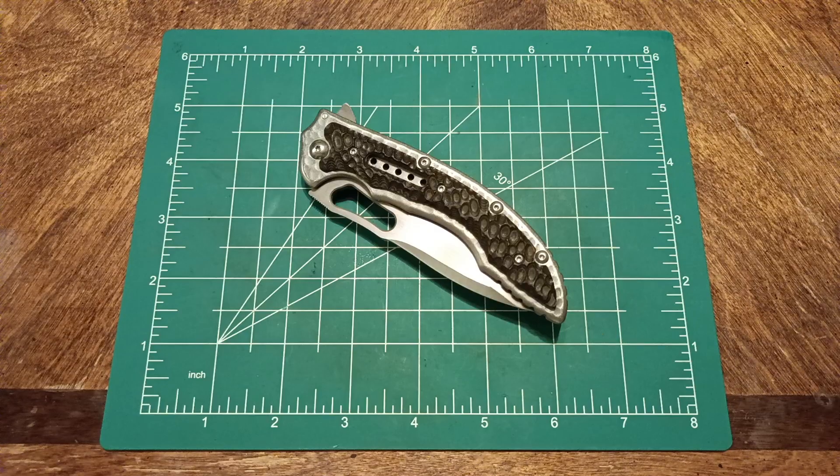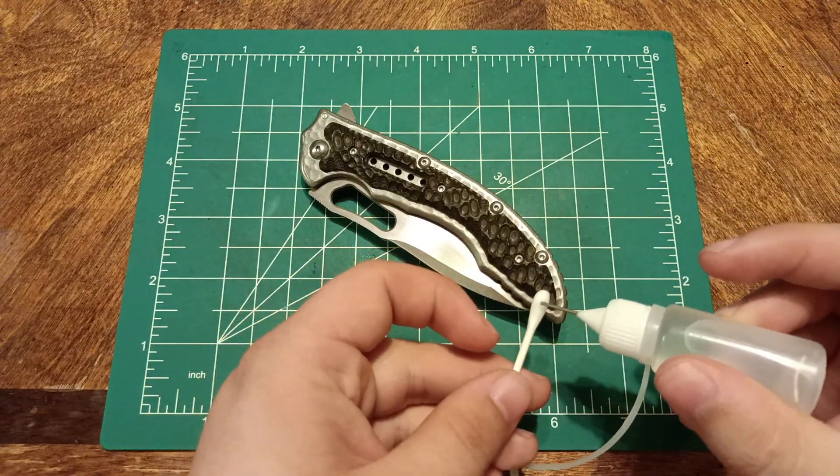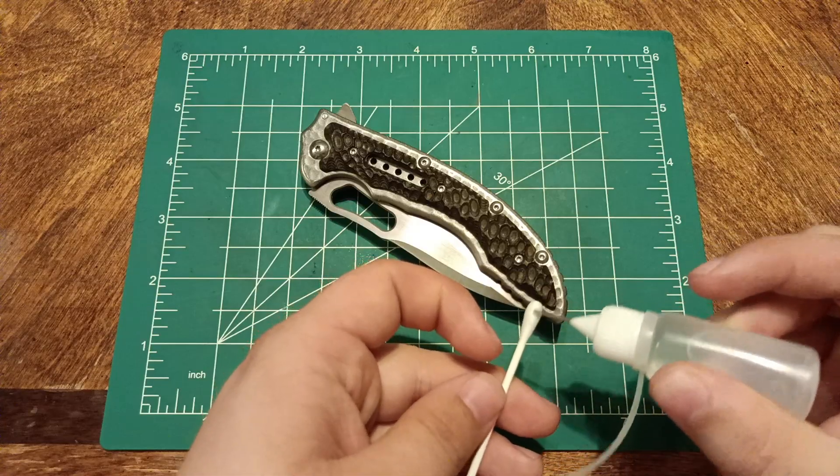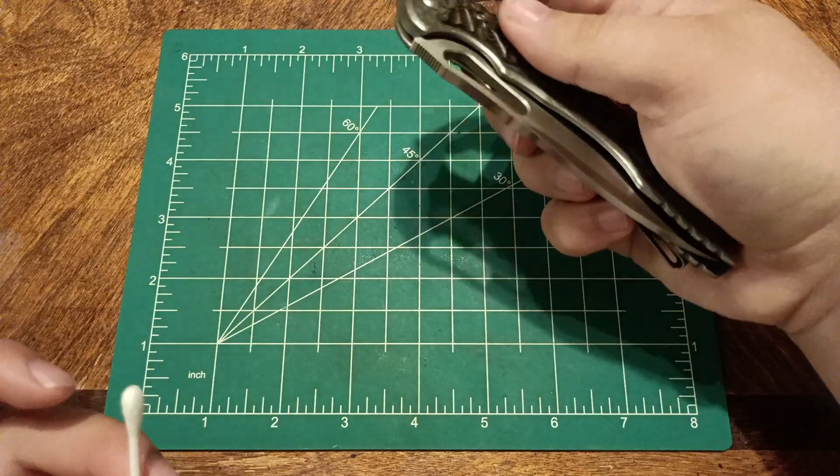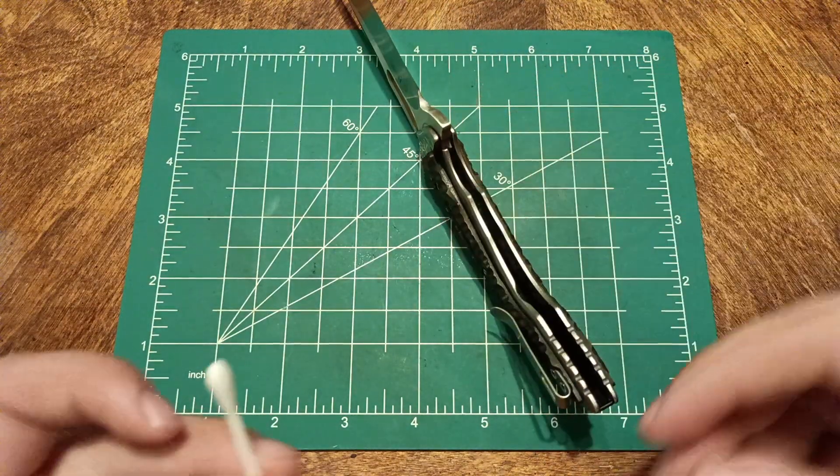So to clean this, we're going to use isopropyl alcohol, 70% from the dollar store, super cheap. Makes things nice and easy.